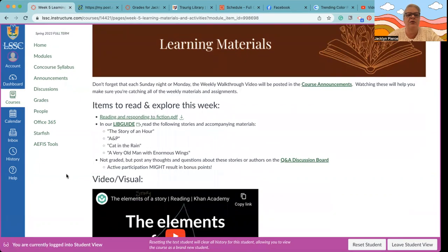In our learning materials and activities, of course you have a list of items to read and explore, including this handout on reading and responding to fiction. That's something that I've written that's a handout that'll kind of help you navigate and get into some of the terminology. Then in the lib guide, of course you have several stories and the accompanying materials to read, including The Story of an Hour, A and P, Cat in the Rain, and A Very Old Man with Enormous Wings.